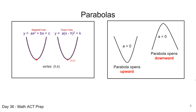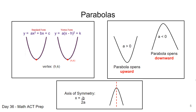For a parabola opening upward or downward, the value of a is the coefficient on the leading term. When a is positive, the parabola opens upward; if a is negative, the parabola opens downward. The parabola is a symmetric figure — you can imagine folding it in half along the axis of symmetry, and it's the same on the left as on the right. The axis of symmetry is the line x equals negative b over 2a.